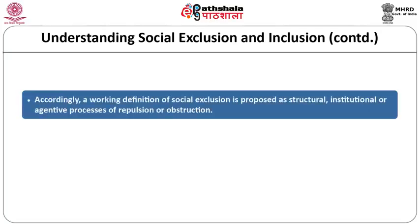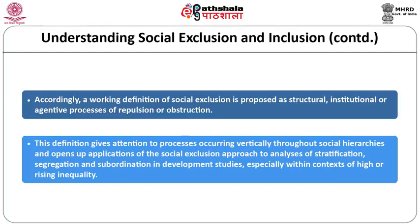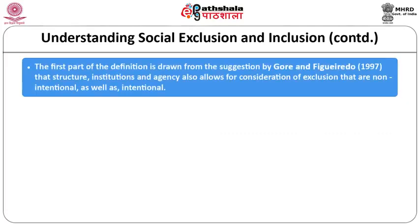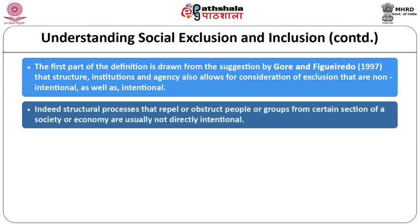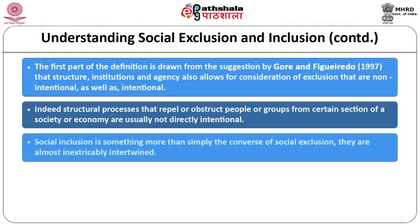Several ambiguities in the social exclusion literature fuel the common criticism that the concept is redundant with respect to already existing approaches, particularly more multidimensional and processual ones. To resolve these ambiguities, social exclusion needs to be reconceptualized in a processual way. A working definition is proposed as a structural, institutional or agentive process of repulsion or obstruction. Drawing from Gord and Figueroa-Dio, structure, institution and agency allow consideration of non-intentional as well as intentional exclusion. Structural processes that repel or obstruct people from certain sections of society are usually not directly intentional.